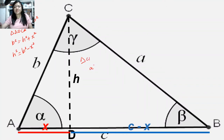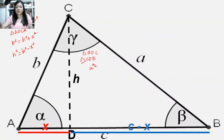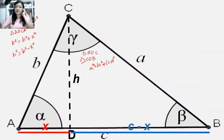For triangle BDC, our hypotenuse is A, so this will become A squared equals H squared plus the quantity C minus X squared. When we need to get the value of H squared, we're going to have H squared equal to A squared minus the quantity C minus X, squared.